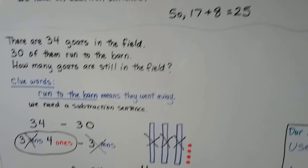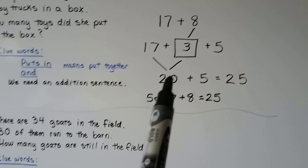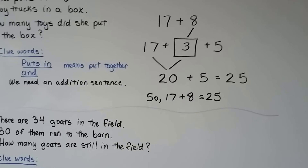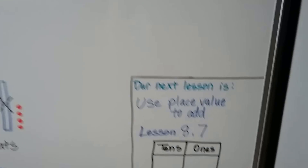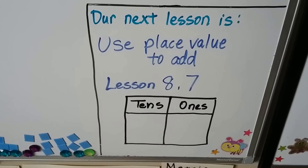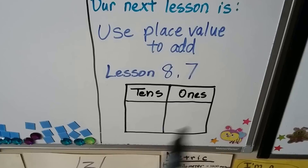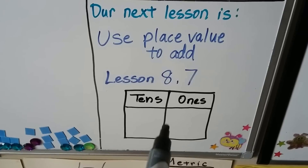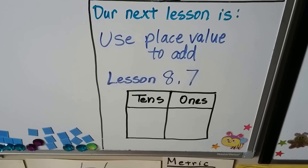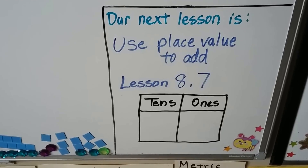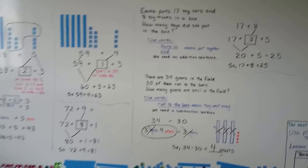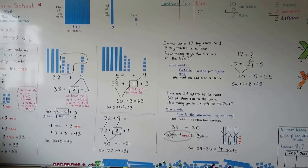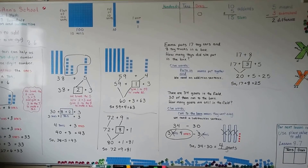You can use models, but remember we can break apart a number to regroup it to make a ten. Our next lesson is 'use place value to add' — we're actually going to use tens and ones place value to help us add numbers. Lesson 8.7. Keep practicing your addition and subtraction facts. See you next time. Bye!